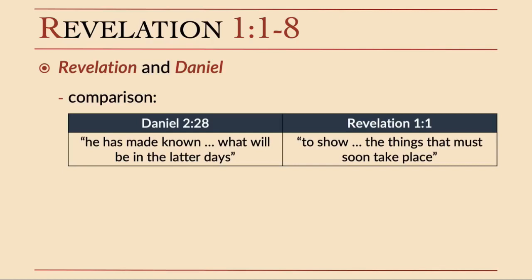So in the days of Daniel, God tells Nebuchadnezzar through Daniel that these things are going to happen in the latter days — a long time from now, Nebuchadnezzar. It's not going to happen tomorrow; it's going to happen well down the road. Now in Revelation chapter 1 and verse 1, we read: 'The revelation of Jesus Christ, which God gave him to show his servants the things that must soon take place.' I want us to note the contrast — Daniel chapter 2 says it's fulfilled much later; Revelation chapter 1 says these are things that must soon take place.